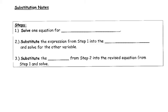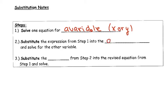Before I show you a substitution example, let's take notes on the steps. Step 1: solve one equation for a variable — typically x or y. Step 2: substitute the expression from step 1 into the other equation and solve for the other variable. Step 3: substitute the answer from step 2 back into the equation from step 1 and solve. Feel free to pause and copy, then rejoin us. Now let's look at an example.